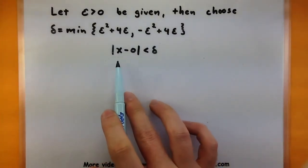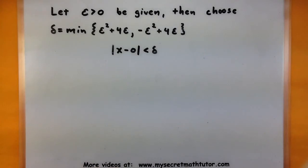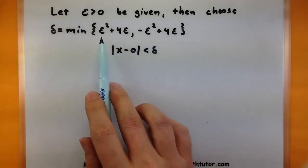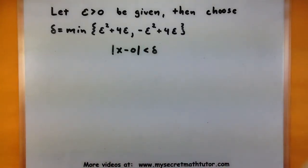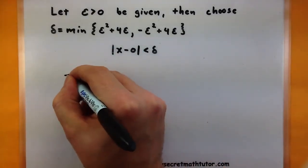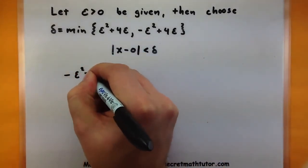So here I have the absolute value of x minus zero is less than delta because that's what x is approaching. Well since I'm making my delta to be the minimum of these two, then I know for sure that it is between these two values.